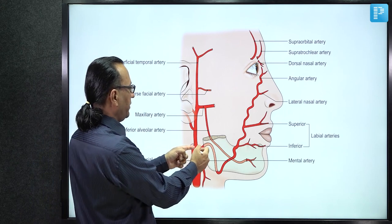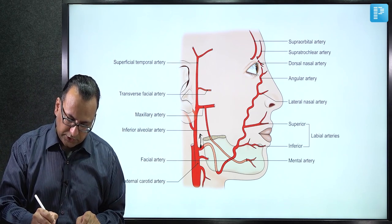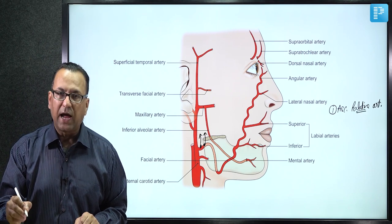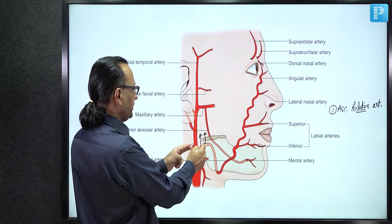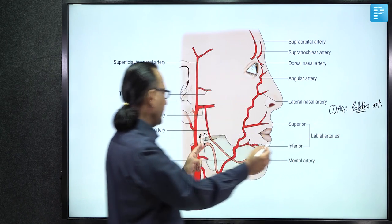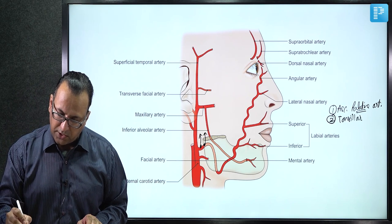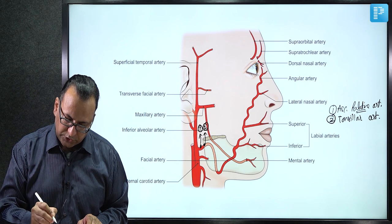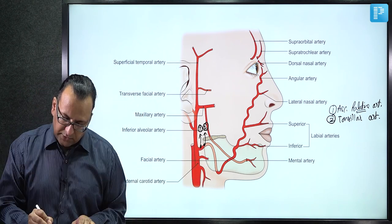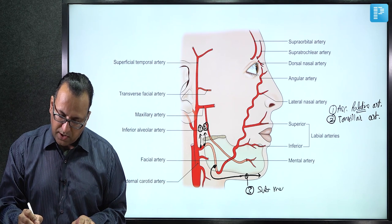In its cervical part, the facial artery gives three branches: (1) ascending palatine artery, supplying the palate and palatine tonsil; (2) tonsillar artery, supplying the palatine tonsil; and (3) submental artery, passing under the mentum of the mandible.